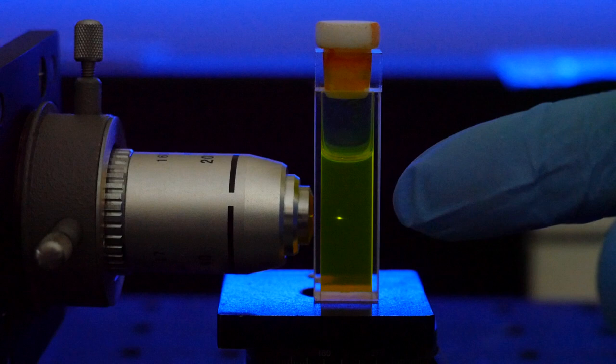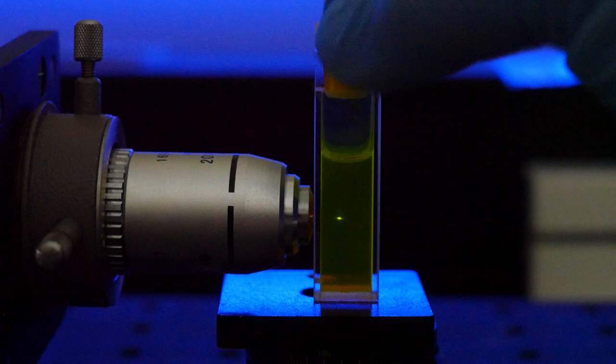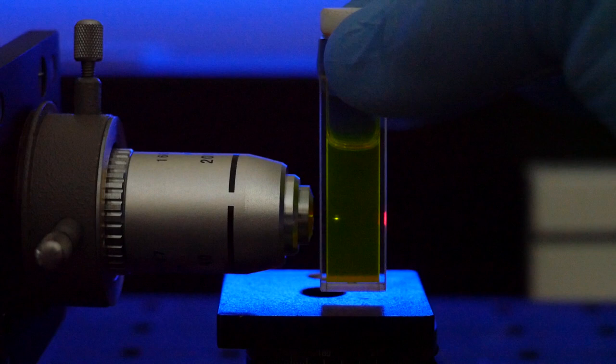Now that the laser is switched on, we can clearly see, at the focal point only, a yellow-orange fluorescent spot. This is unlike what we saw with single photon absorption where the entire beam path is illuminated. If I move the cuvette around you can see that I can illuminate any single point that I like within the cuvette.